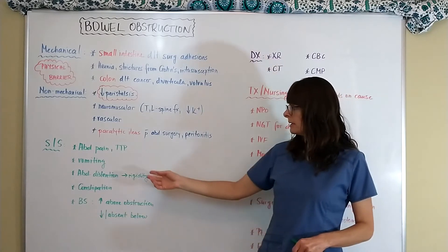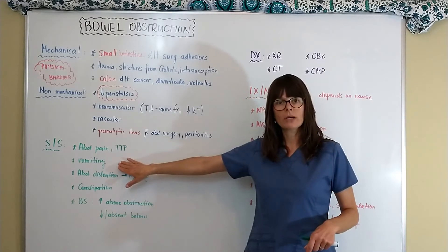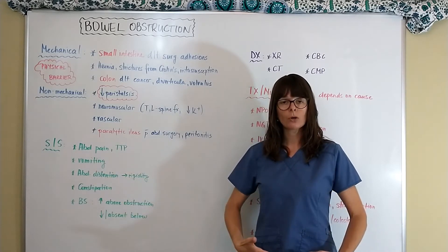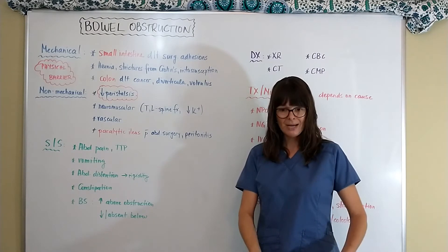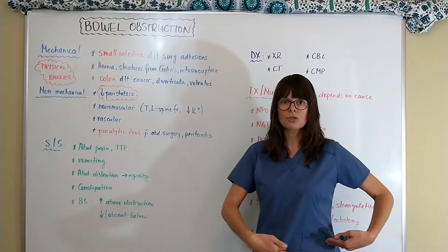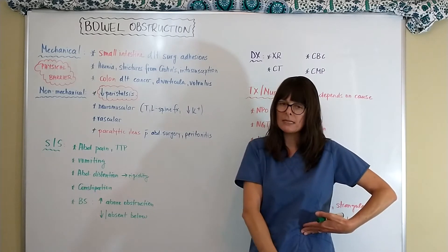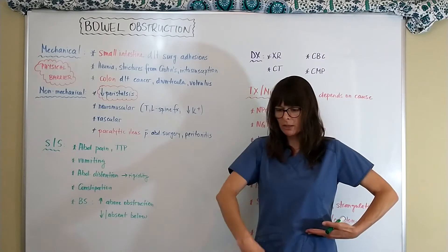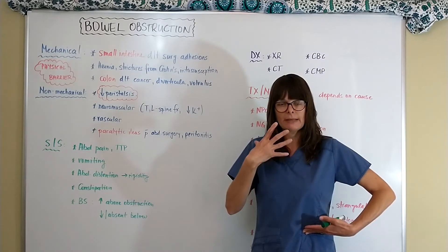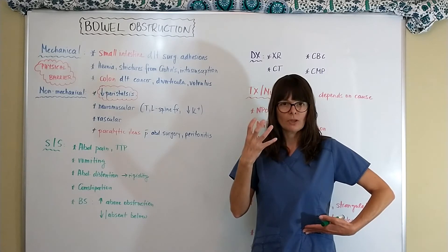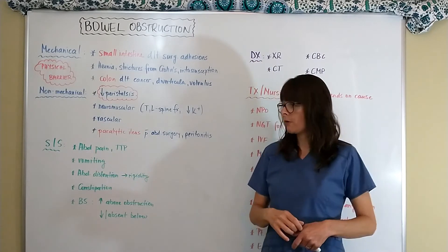Signs and symptoms of any type of bowel obstruction include abdominal pain, tenderness on palpation, and vomiting. The character of the vomit depends on where the obstruction is. With a very low obstruction — say, in the descending colon — everything backs up above it, so the vomit becomes increasingly foul-smelling and stool-like, because nothing can move down and digestive contents back all the way up.